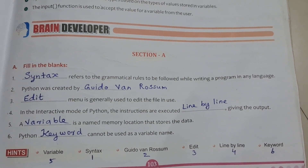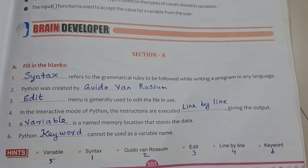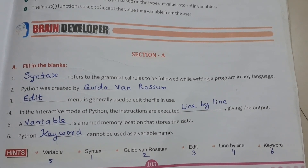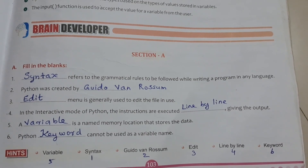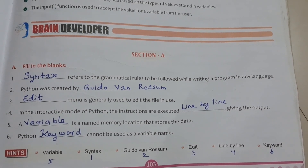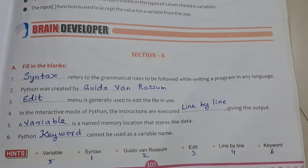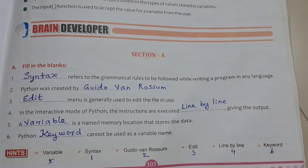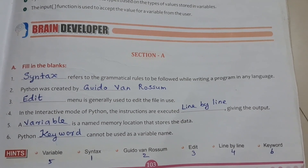In the interactive mode of Python, the instructions are executed dash, giving the output. Answer is line by line. A dash is a named memory location that stores the data. Answer: Variable. Python dash cannot be used as a variable name. Answer: Keyword.